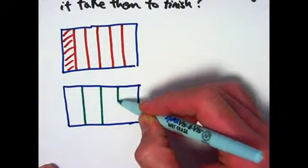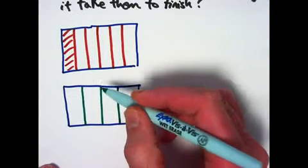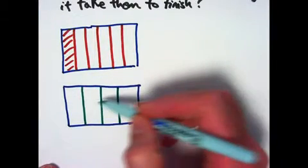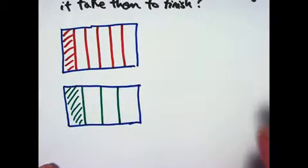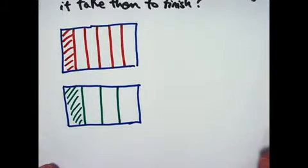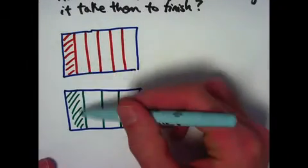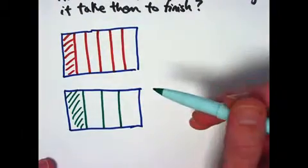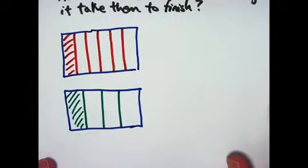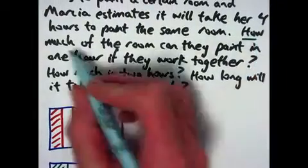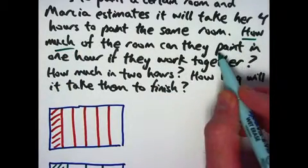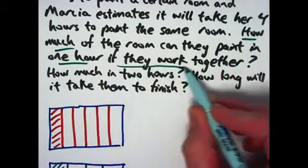On the other hand, Marsha takes 4 hours to paint the same room. So I'm going to split the room up into 4 equal pieces. It takes Marsha less time to paint the room, meaning she paints it faster. These are supposed to be 4 equal pieces. She would be able to paint this much of the room in one hour. So assuming they work at the same time and don't overlap, I'd have to add, in essence, these two areas together and figure out what fraction of the entire wall or room that is to figure out the answer to the first question.